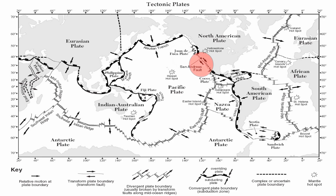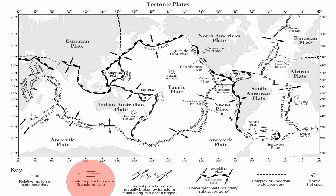The last type of plate boundary is the transform boundary. The most common example is where the Pacific plate is sliding past the North American plate in California — called the San Andreas Fault. There are other locations: side-by-side motion takes place between the African plate and the Antarctic plate, between the Scotia plate, South American plate, and Antarctic plate, between the Indian-Australian plate and the Pacific plate running through New Zealand, and also between the North American plate and the Caribbean plate. Make sure you notice the arrows and the direction of plate motion.